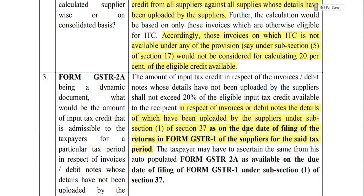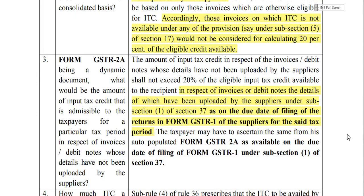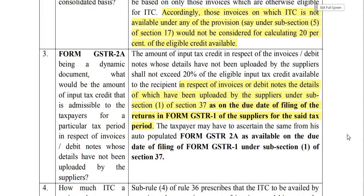The third question is very important: since GSTR-2A is a dynamic document — meaning invoices keep getting uploaded and reflected over time — what would be the amount of input tax credit admissible to the taxpayer for a particular tax period in respect of invoices whose details have not been uploaded by the supplier? If GSTR-2A keeps changing, how much extra 20% can be claimed?